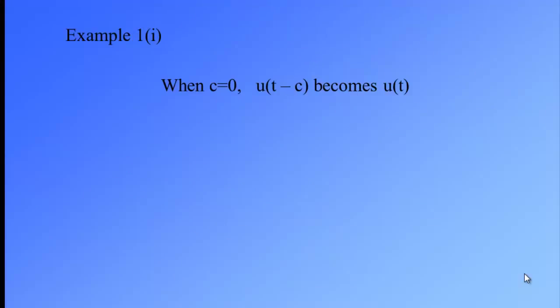For example, when c is equal to 0, u(t-c) becomes u(t). And the graph becomes 1 after t equal to 0.